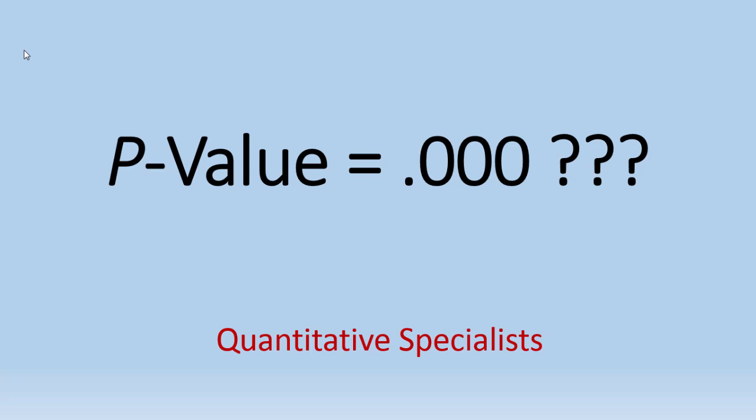In this video I want to take a look at a question that I get a lot from people, and that is when they get a p-value in their computer output reported as .000 and often they're concerned that maybe they made an error or they're not sure what that means. So I wanted to cover this topic in this video.